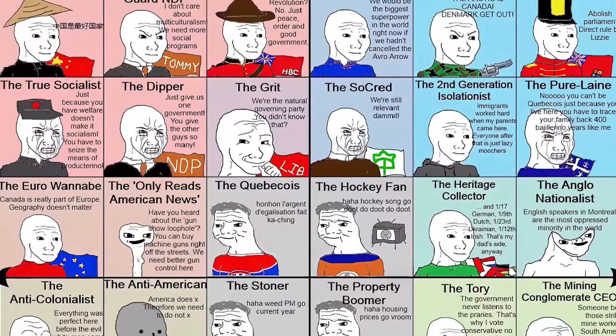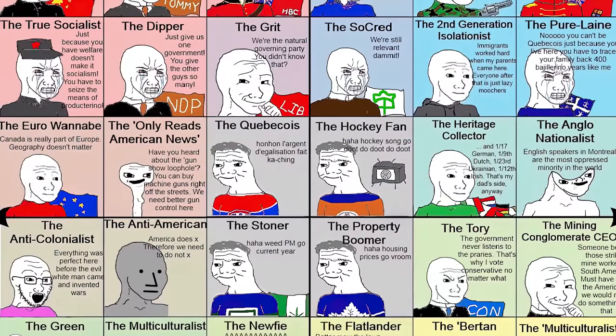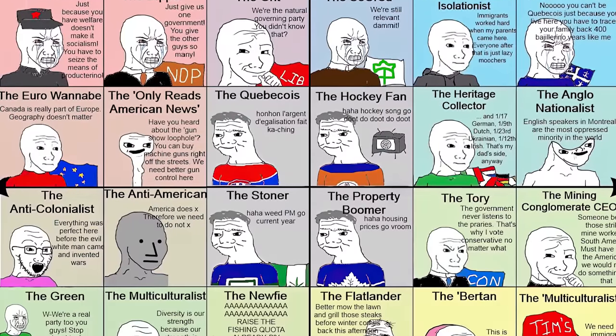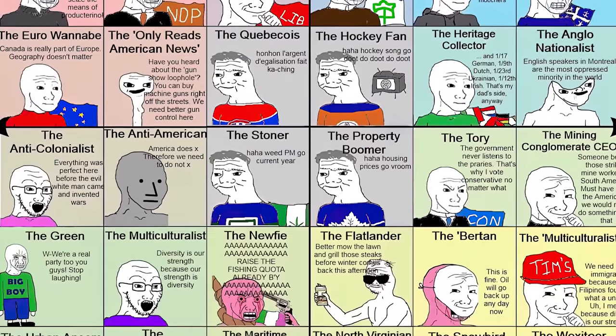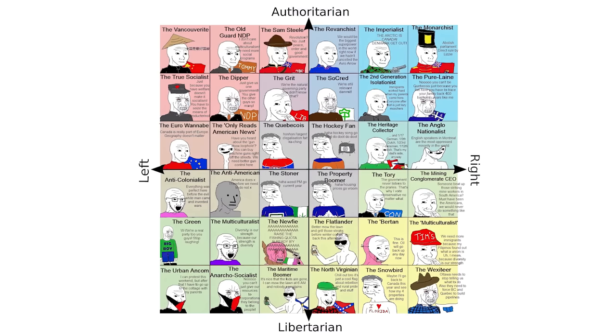I actually discovered this thing a while ago and was immediately intrigued. It purports to be a very in-depth chart showing where all of the different Canadian political ideologies should be placed on that famous four-way political compass. Ordinarily I wouldn't be won over by this because, as we all know, the political compass is a complete load of dreck that only an utter moron would take seriously.